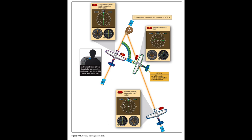VOR Receiver Accuracy Check. VOR system course sensitivity may be checked by noting the number of degrees of change as the OBS is rotated to move the CDI from center to the last dot on either side — the course selected should not exceed 10 to 12 degrees either side. In addition, 14 CFR Part 91 provides for certain VOR equipment accuracy checks and an appropriate endorsement within 30 days prior to flight under IFR. Means for checking VOR receiver accuracy include the VOR test facility (VOT) or a radiated test signal from an appropriately rated radio repair station.